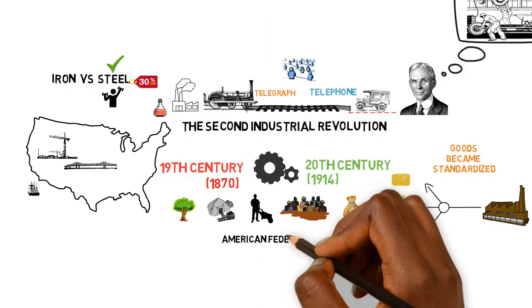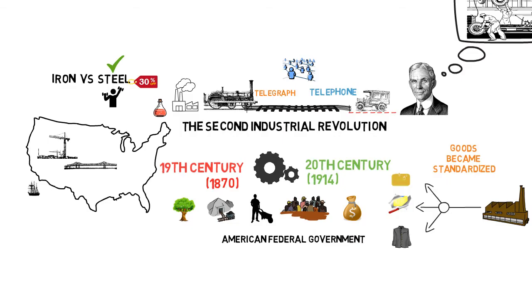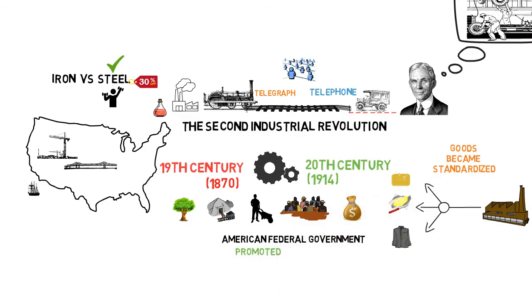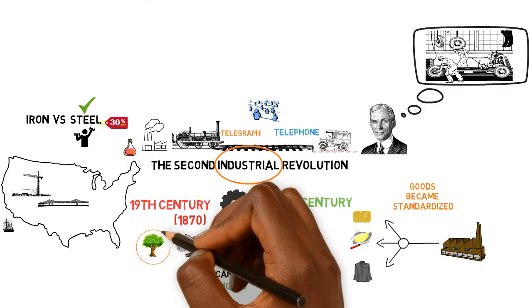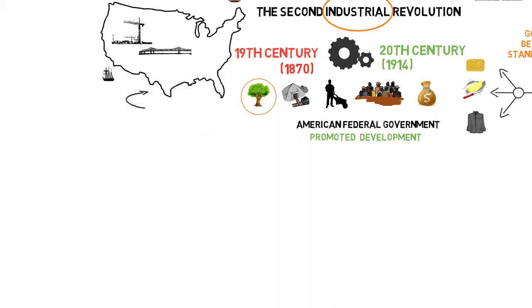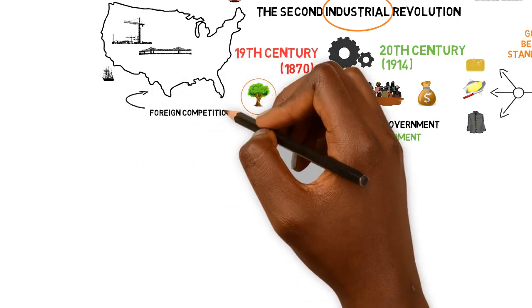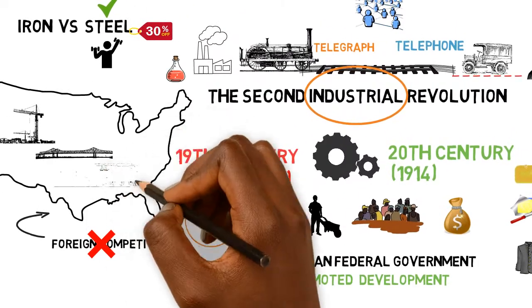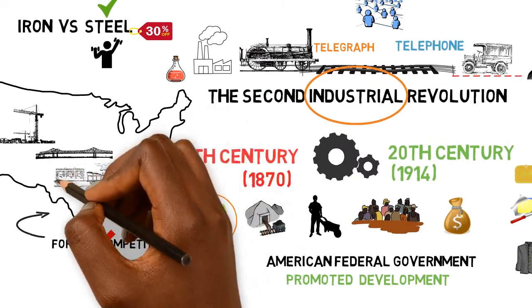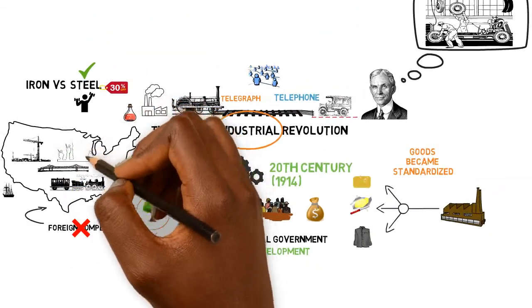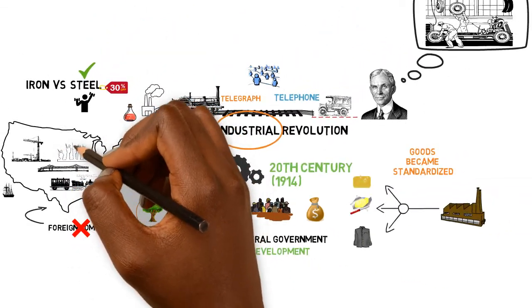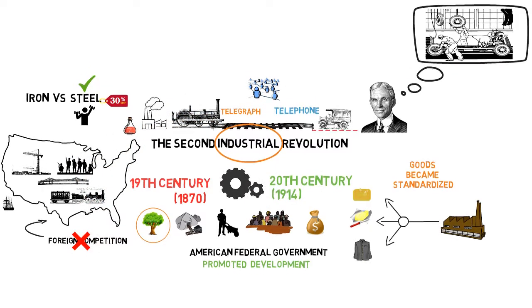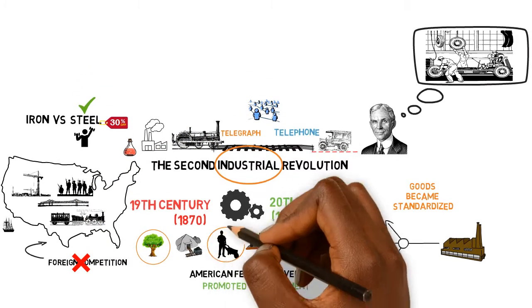The American federal government actively participated in this revolution by promoting industrial and agricultural development. High tariffs were enacted to protect American industry from foreign competition. Land was given to railroad companies to encourage construction, and the army was even deployed to remove native Indians from land that was wanted by farmers or mining companies.